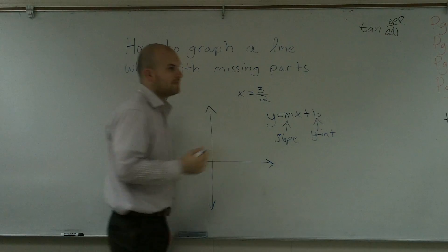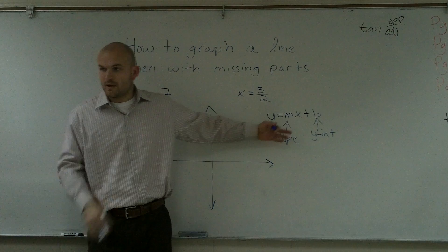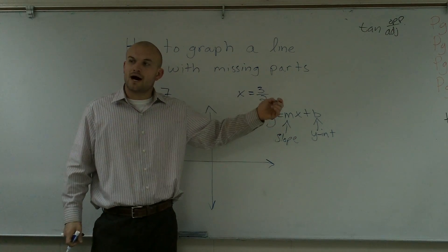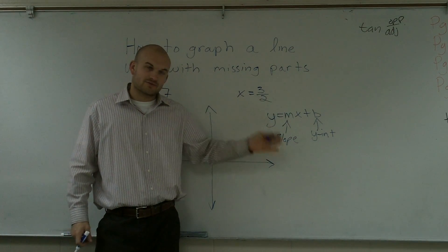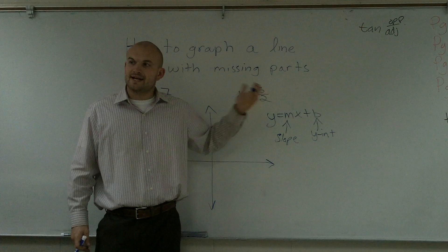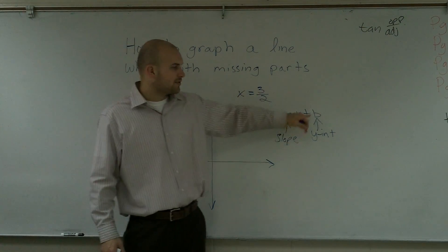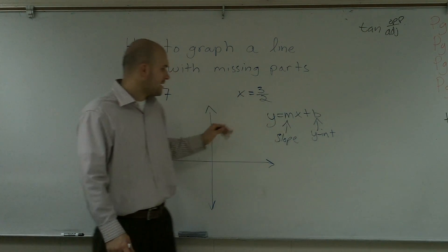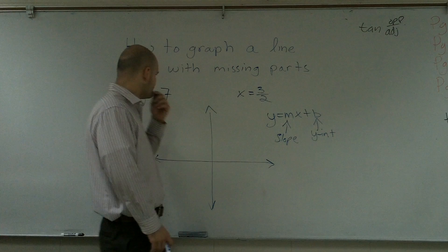A quick thing to remember about slope: slope is our change in y over our change in x — and when I'm talking about y and x, I'm talking about the y and x values of a point. When I'm talking about y-intercept, I'm talking about where a graph crosses the y-axis.